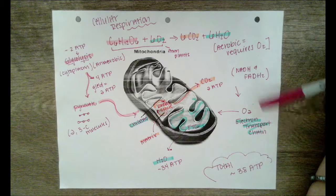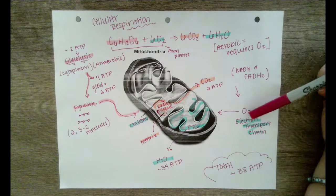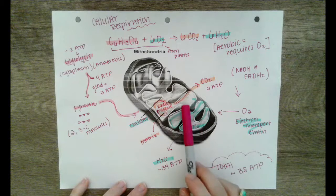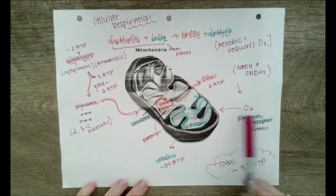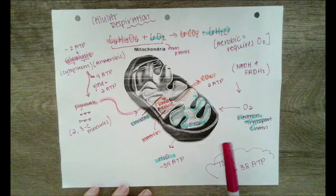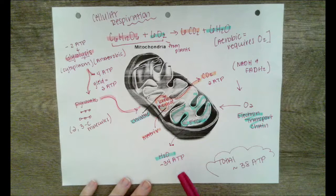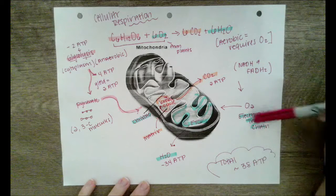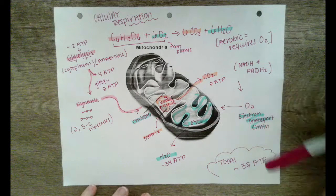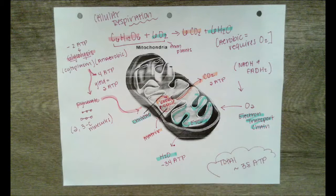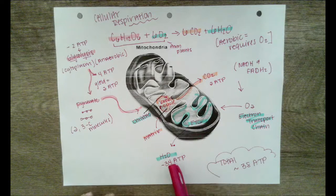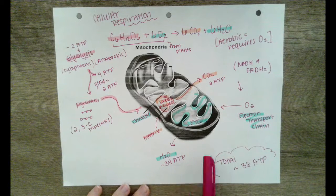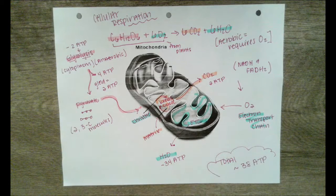The electron transport chain takes in oxygen. It happens on the cristae, which are the inner folds of the mitochondria, and it produces water along with about 34 ATP. Oxygen is our final electron acceptor here. It goes into the electron transport chain, pumps a whole bunch of electrons, creates water as a byproduct, and yields the most of the three parts of respiration.